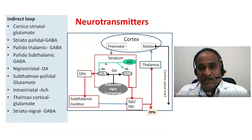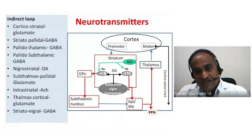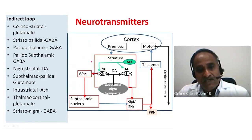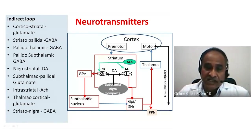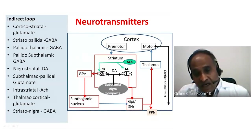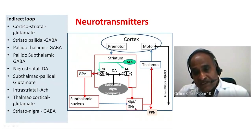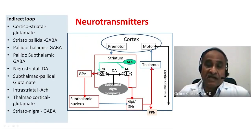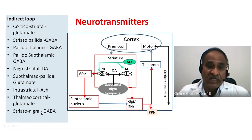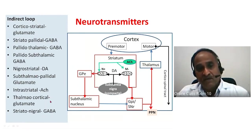From the striatum to the globus pallidus externa or globus pallidus interna, the transmitter is GABA. From the globus pallidus to the subthalamic nucleus (pallidosubthalamic tract), it is also GABA. From the subthalamus back to the pallidus (subthalamopallidal), it is glutamate. From the pallidus to the thalamus (pallidothalamic tract), it is GABA. And thalamocortical projections use glutamate.